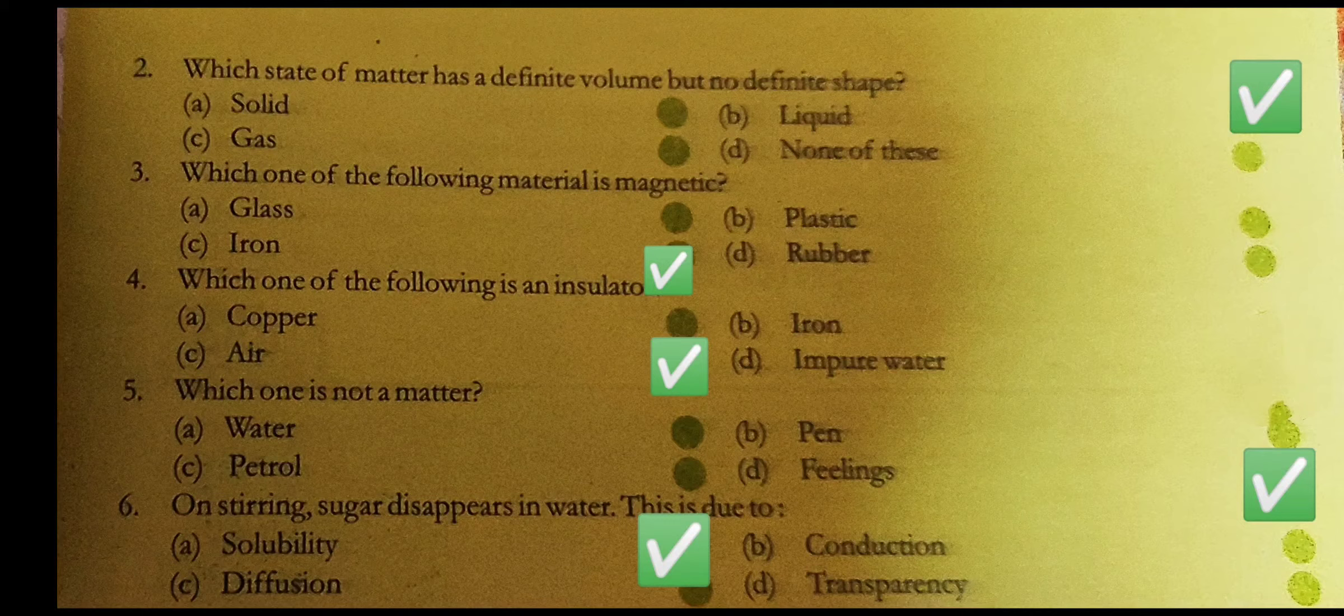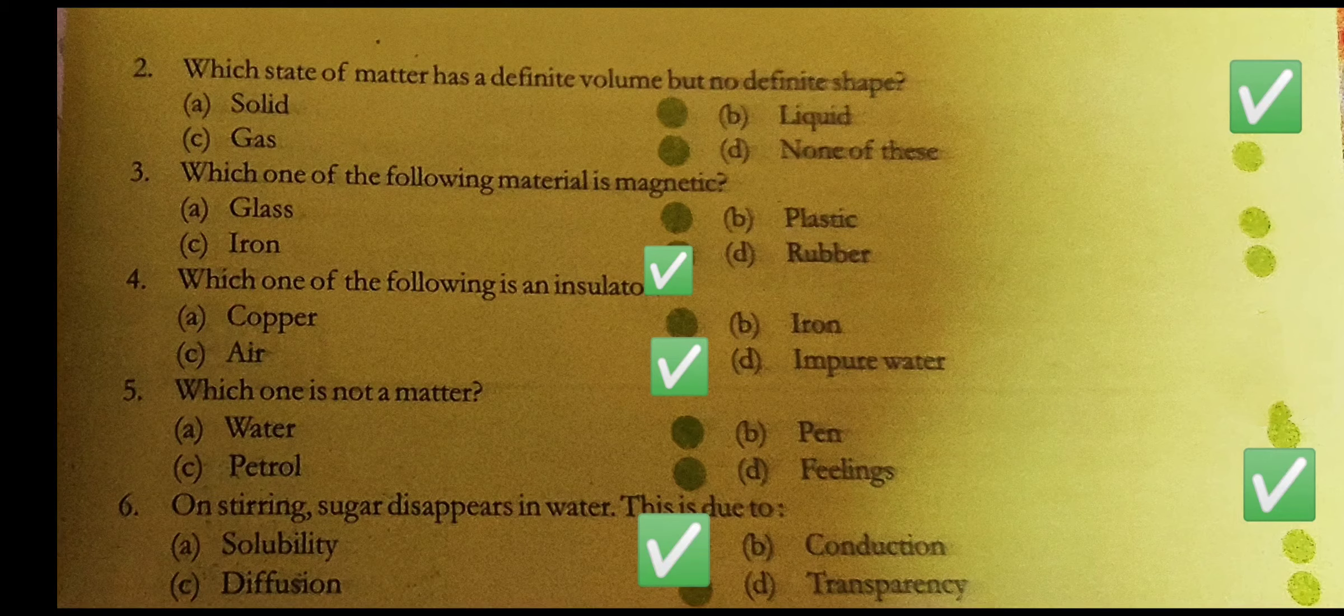Question 4. Which one of the following is an insulator? Copper, iron, air, impure water. Air is your answer.